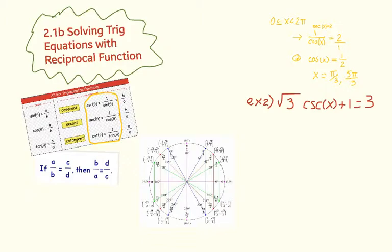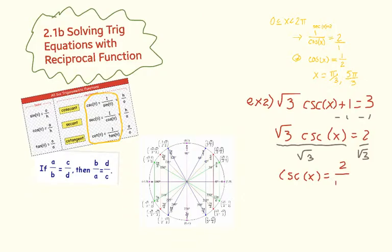So in this equation, this is more typical, I need to start by getting cosecant of x alone. So I'm going to go ahead and do that. I'm going to do that by subtracting the 1 from both sides. So I have the square root of 3 times the cosecant of x equals 2. And then from there, we need to divide both sides by the square root of 3. So now I have that the cosecant of x equals 2 over the square root of 3.